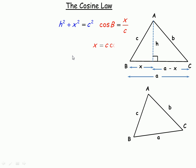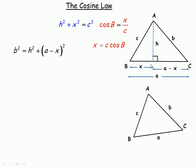So x equals c cos B. Now, using Pythagoras' theorem again, but in the triangle on the right side, b is the hypotenuse — the longest side — so b squared equals h squared plus the quantity (a minus x) squared.